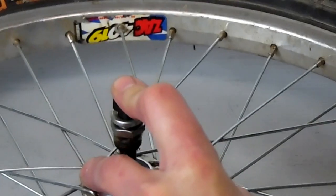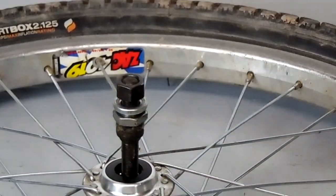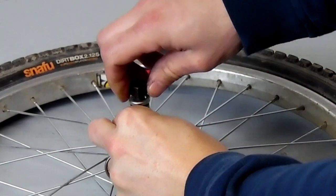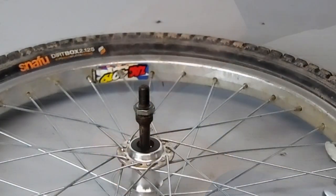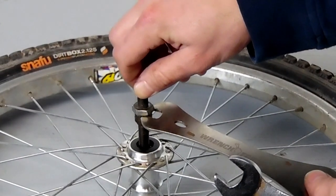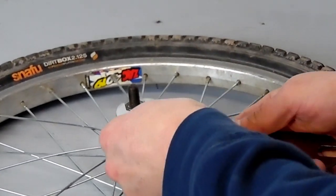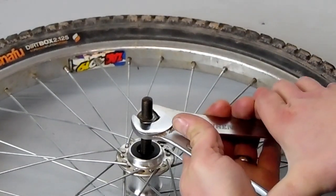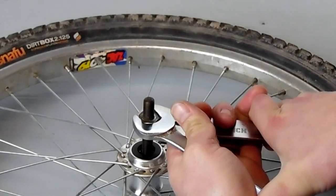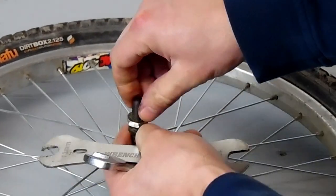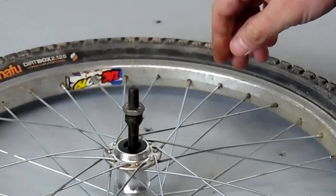So I just flip the wheel over, leaving the axle in it to hold the bearings in place. I use my cone wrench and wrench to loosen the other side and then remove the hardware on the other side.